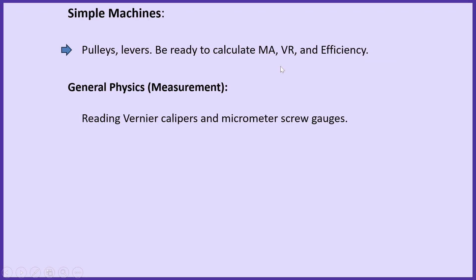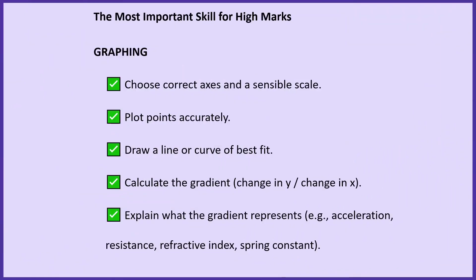Under Simple Machines — especially levers and pulleys — be ready to calculate mechanical advantage, velocity ratio, and efficiency. Under General Physics and Measurements, practise reading Vernier calipers and micrometer screw gauges.